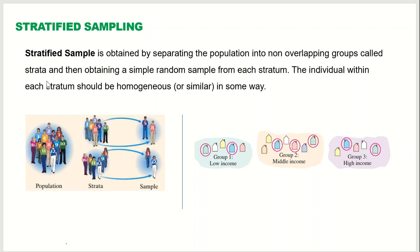The second sampling method is stratified sampling. A stratified sample is obtained by separating the population into non-overlapping groups called strata, and then obtaining a simple random sample from each stratum. What we do is divide the large population into small groups — here is my first group, here is my second group. Those small groups are called the strata.